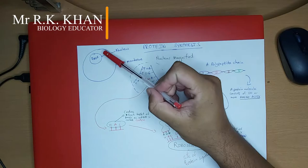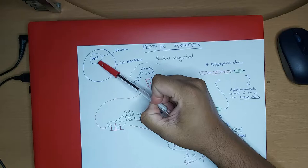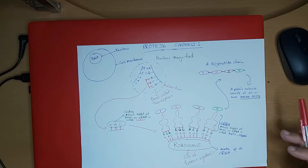It starts off with a cell. Here we have a cell — there's a cell membrane — and then we have the nucleus. It starts off in the nucleus. Inside the nucleus, we know that the nucleus contains DNA, or hereditary information.